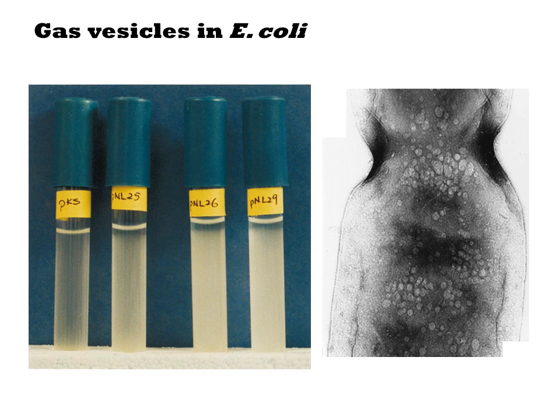When you examine the bacteria by TEM, you can see the little vesicles. At right, you are looking at a bacterium zoomed in. At the top of the image, you can see the septa where the bacterium is dividing. The white bubbles are the vesicles.